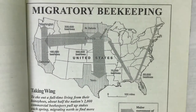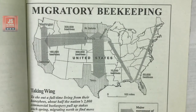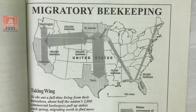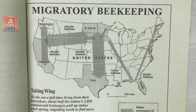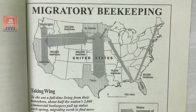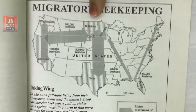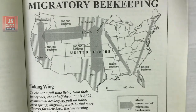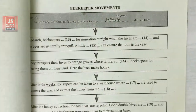In today's lesson I am going to teach you how to solve the reading module. For that you have to keep two things in your mind. First of all, you have to read the heading of the passage. The heading is 'Migratory Beekeeping.' The second important thing is to have a look at the questions before reading the passage. There are three types of questions given here.